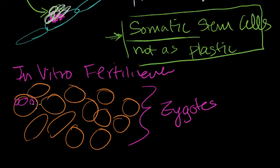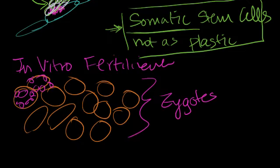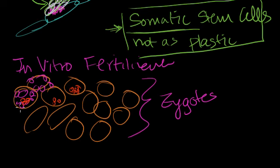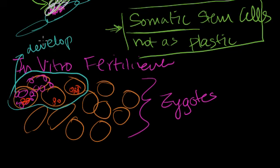They allow the zygotes to develop, usually to the blastocyst stage — with a blastocoel in the center and the inner cell mass. They look at the ones they deem healthier and implant a couple into the mother. Maybe these four look good, so they implant those four. If all goes well, maybe one will give the couple a child. But as you may have seen from shows like Jon and Kate Plus 8, many times they implant a lot of them to increase the probability of getting at least one child — and every now and then they implant 7 or 8 and end up with 8 kids.